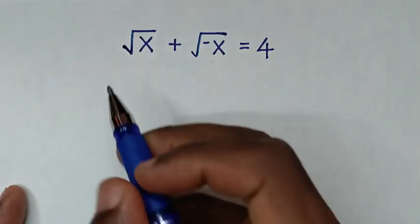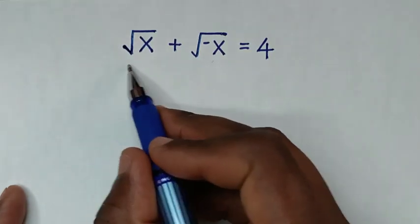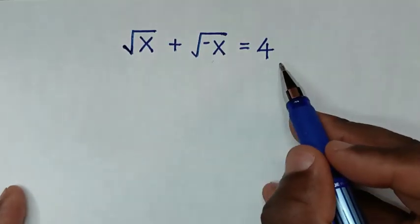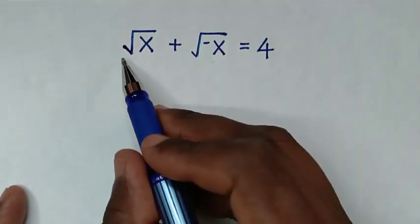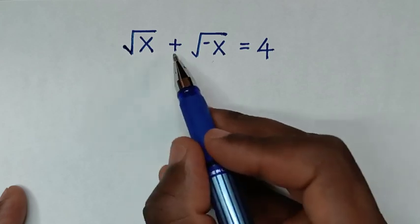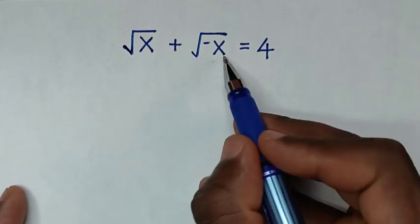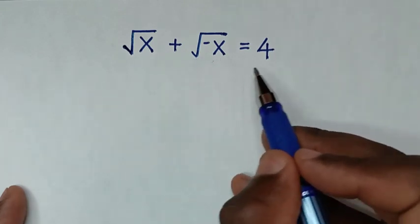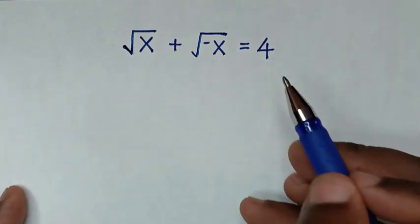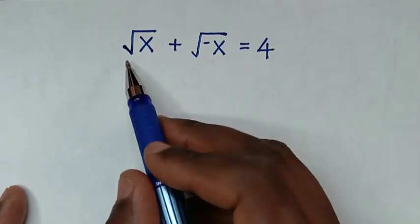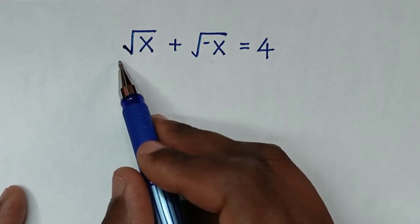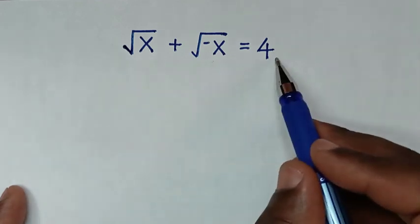Hello, you are welcome to solve this math problem which is: square root of x plus square root of negative x is equal to 4. We need to find the values of x from this equation.